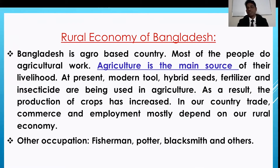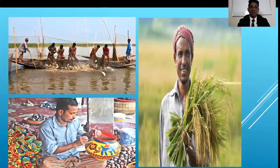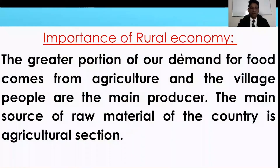We get various types of raw materials from the agriculture side. Now, students, you can see a picture: a fisherman catching fish, a farmer planting a crop in a paddy field, and a man making pots. These three pictures are about rural economy. Now, here you can see the importance of rural economy. The greater portion of our demand for food comes from agriculture and the village. Village people are the main producers. The main source of raw materials of the country is the agricultural sector. We get our raw materials from the agriculture sector.